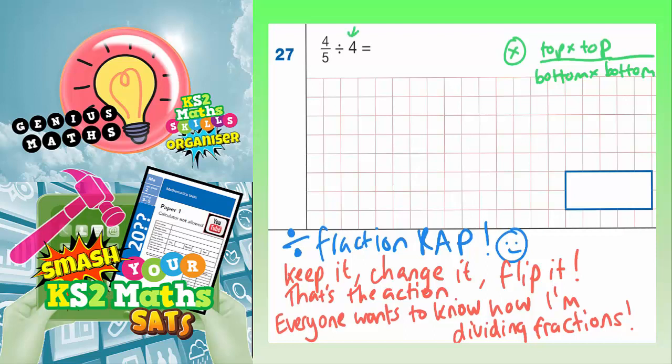Well, this whole 4 here is 4 whole ones. Now, we can change it into a fraction by putting an invisible 1 underneath. There is an invisible 1 underneath that, but it's still worth 4 because 4 divided by 1 is still worth 4. So you can change it into a fraction. Now we've actually got two fractions, 4 fifths divided by 4 over 1.